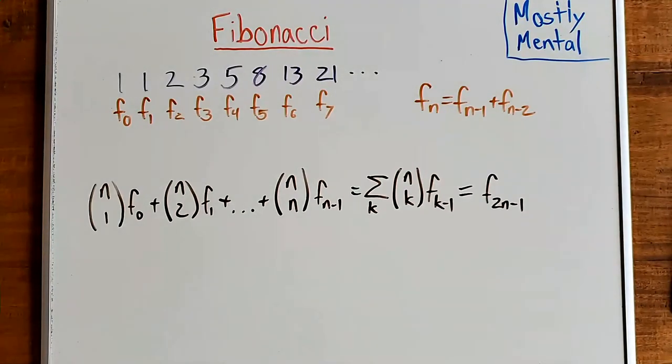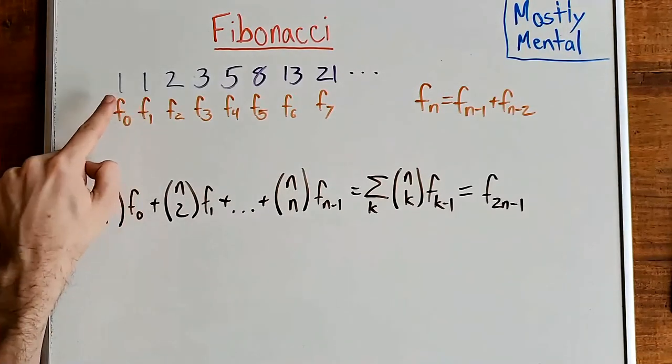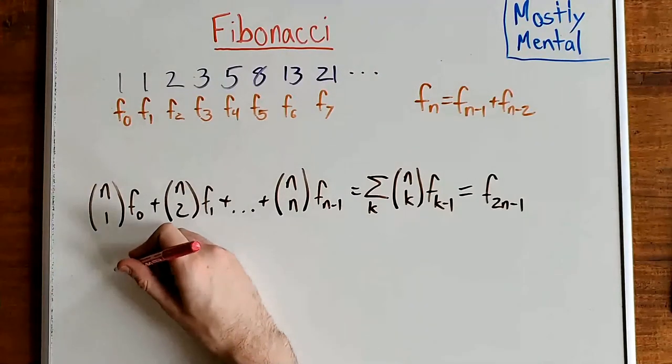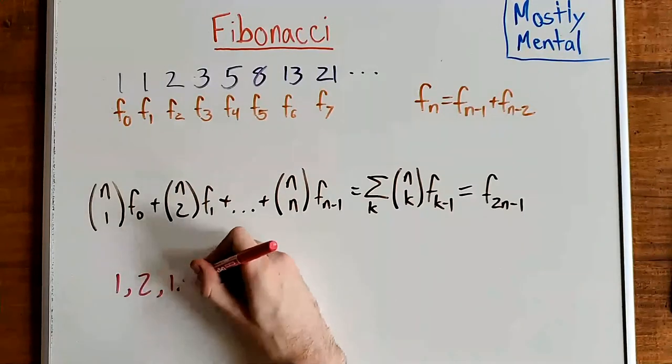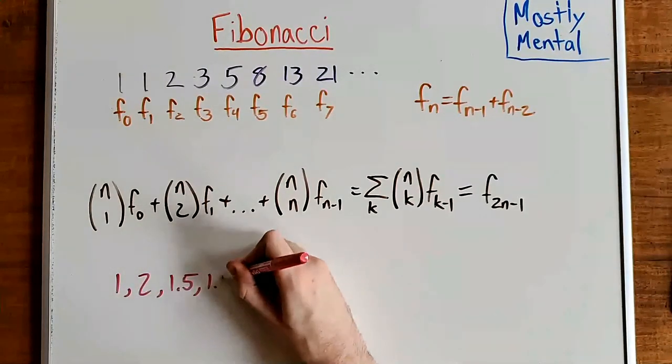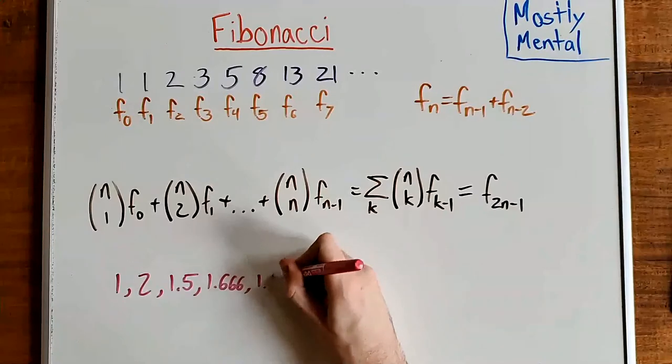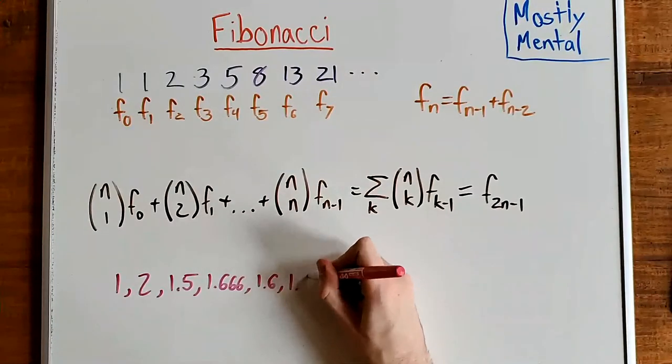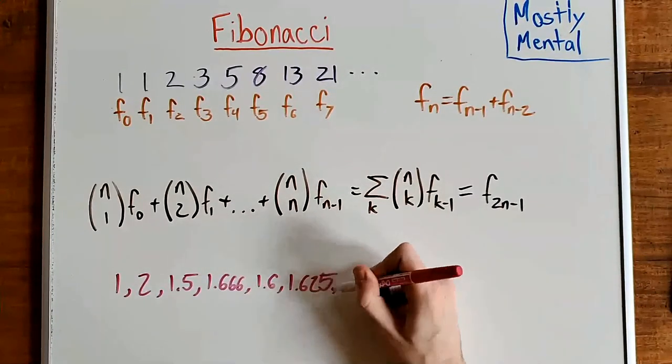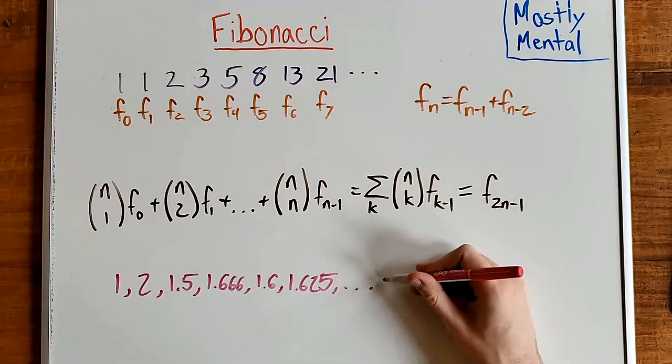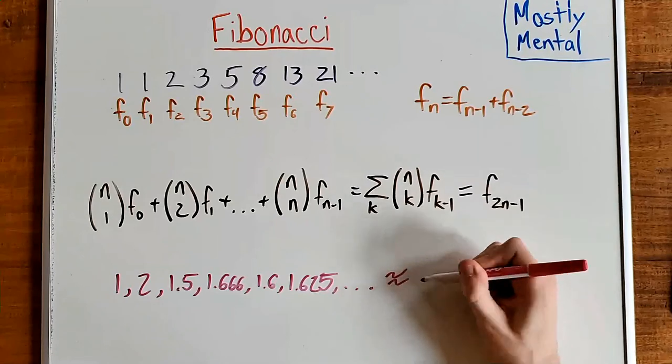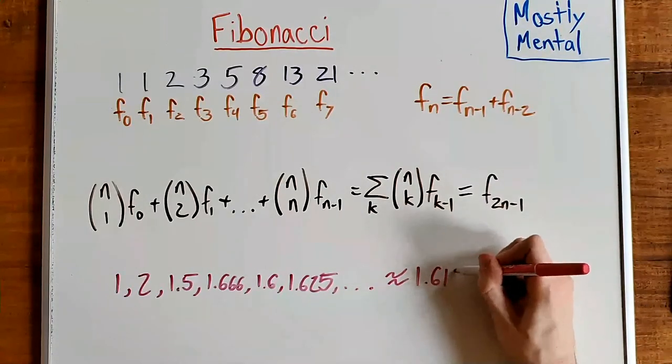And there's one more relationship between Fibonacci numbers that you may have seen before. If you take the ratios between consecutive Fibonacci numbers, you get 1 over 1 is 1, then 2 over 1 is 2, then 1.5, 1.666, 1.6, 1.625, and so on. The further out we go, the closer that ratio seems to get to something around 1.618-ish.